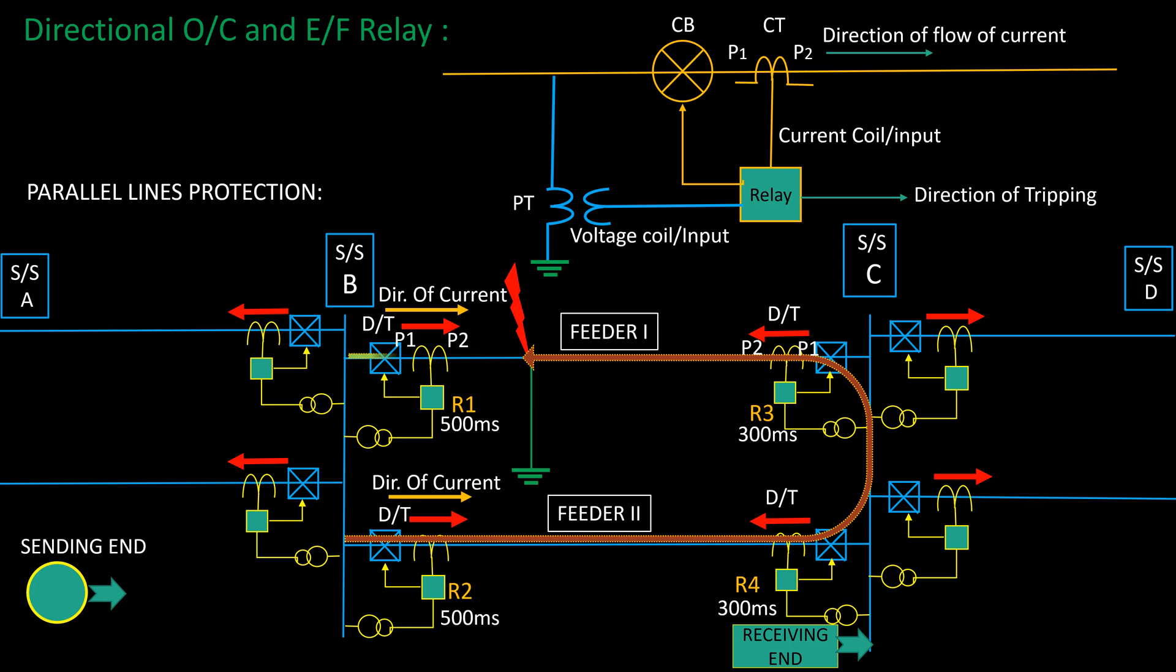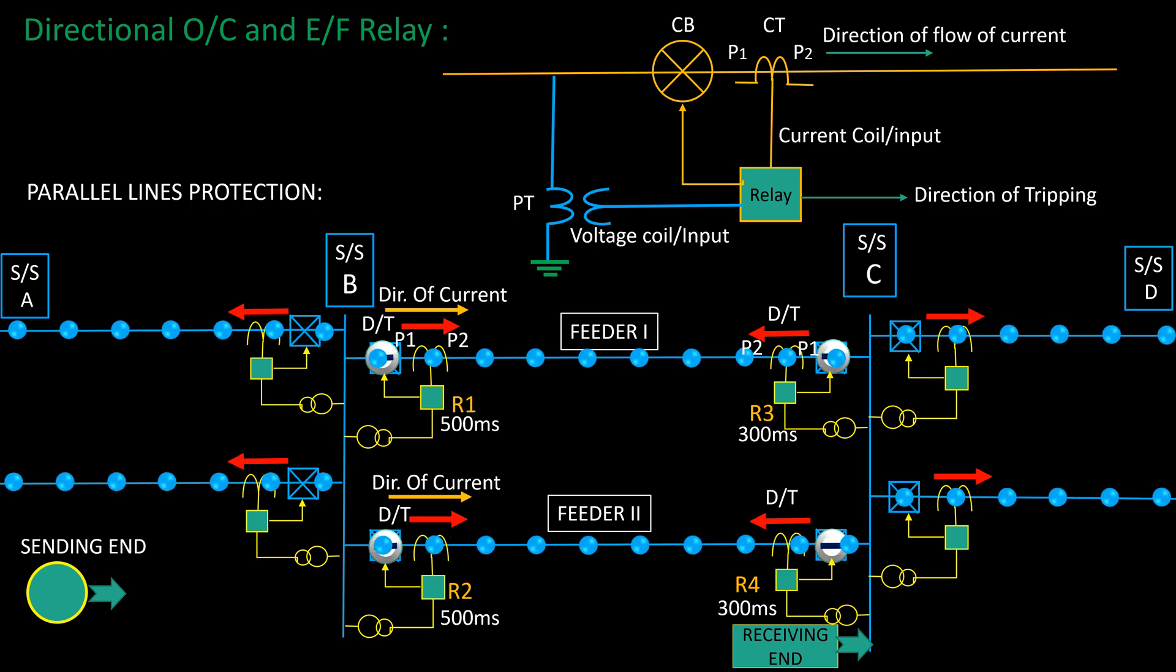Due to the fault, flow of current through the relay R1 is same in the direction of tripping of relay R1, and the relay R1 issues a tripping of its circuit breaker. As a result, faulty feeder will trip at both ends and rest part remains unaffected.